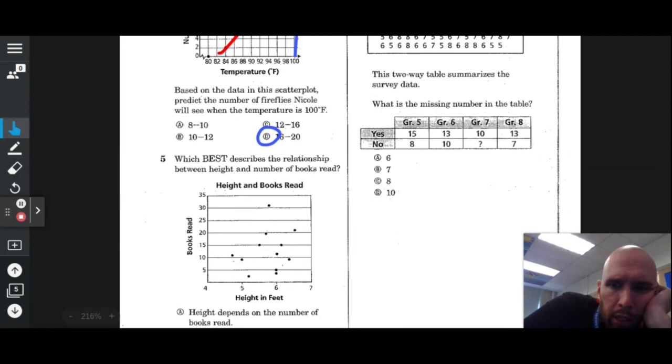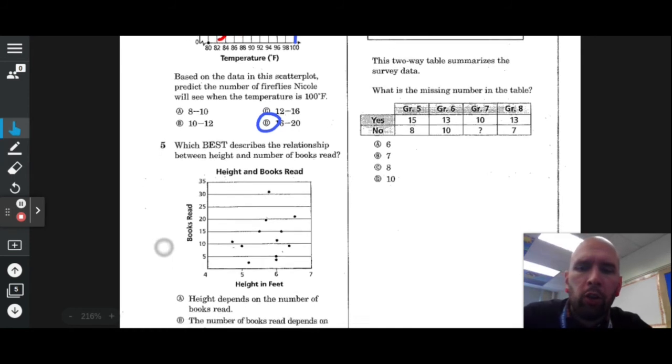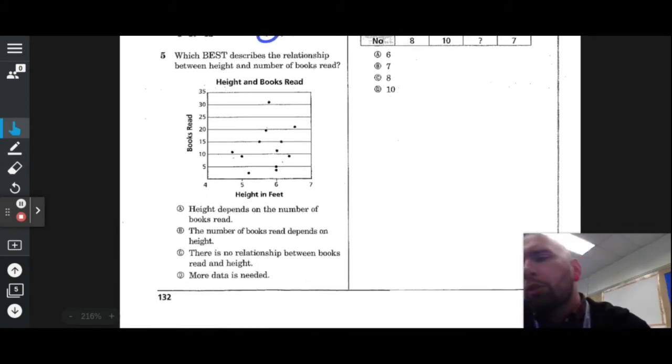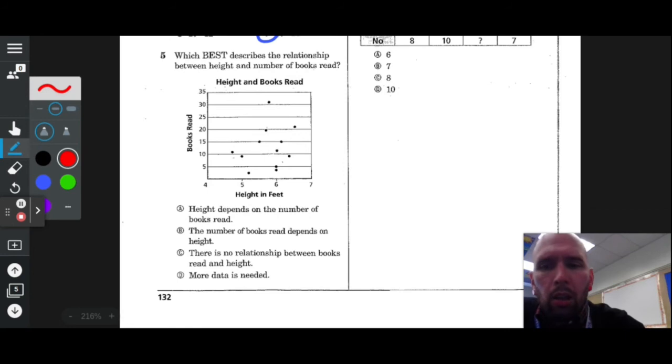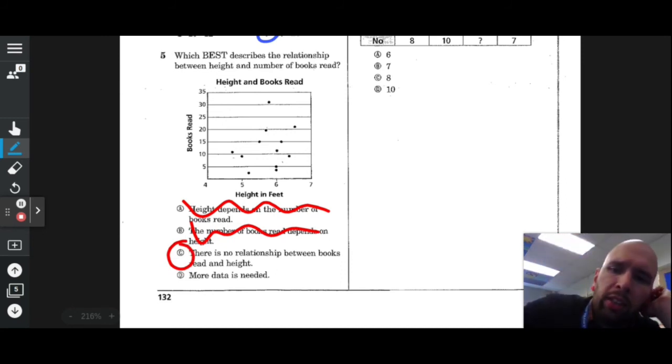Which best describes the relationship between height and the number of books read? I don't see a correlation here, so my guess is how tall you are shouldn't have anything to do with how many books are read. There's no relationship between books read and height. How tall you are has nothing to do with how many books you read. That's silly because there's no correlation.